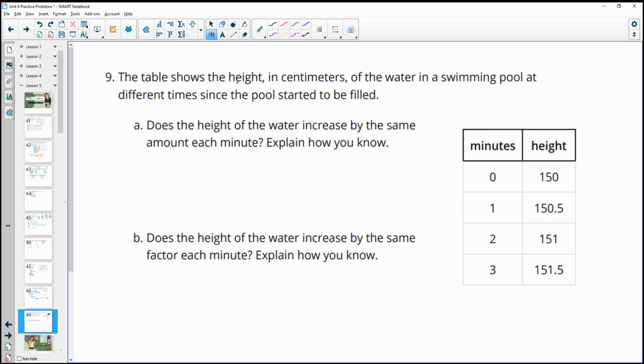Number 9. The table shows the height in centimeters of water in a swimming pool at different times since the pool started to be filled. Does the height of the water increase by the same amount each minute? So we just look. How far did it increase here? It went up 0.5 meters. 150.5 to 151 is 0.5 meters. And 151 to 151.5 is 0.5 meters. So yes, it's growing or filling by 0.5 meters each minute.